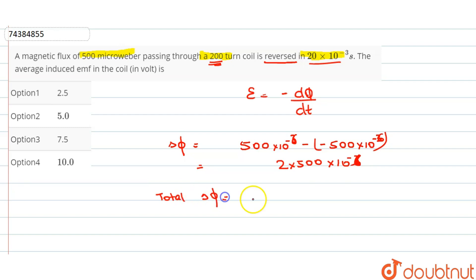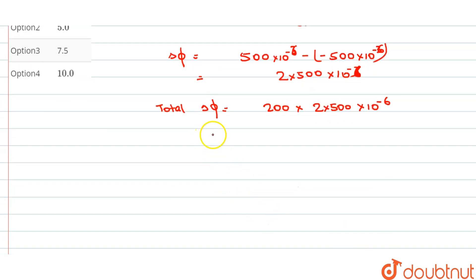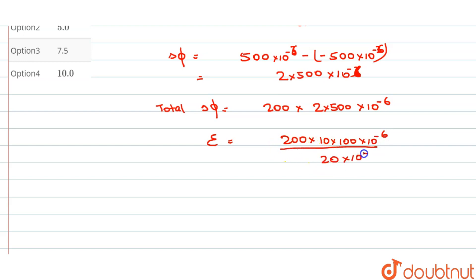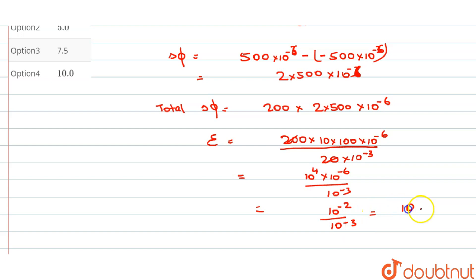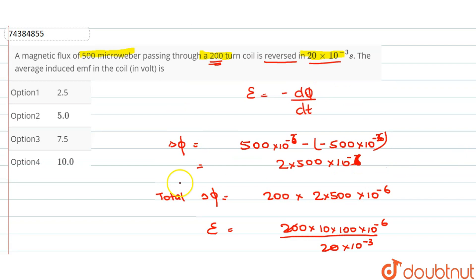Total ΔΦ is equal to 200 × 2 × 500 × 10⁻⁶. That gives us 10 × 10⁻² upon 3, which is equal to 10 volts. So our induced EMF is 10 volts.